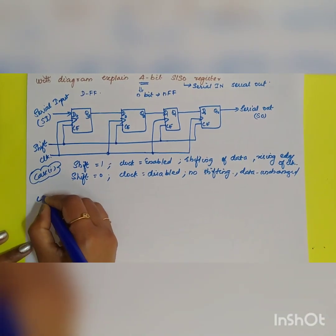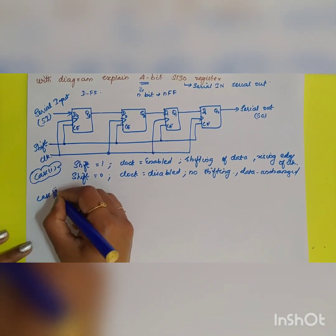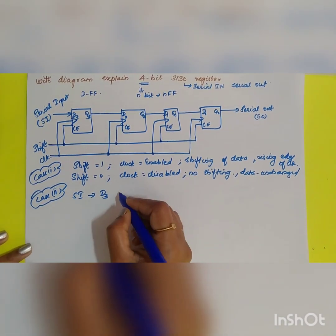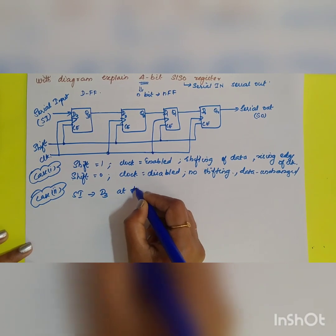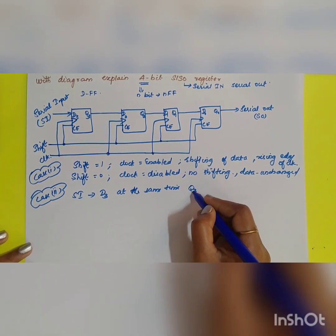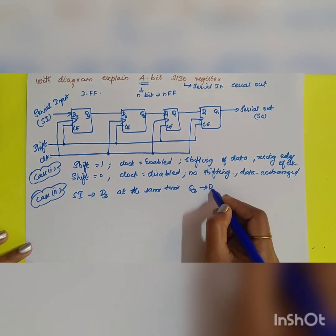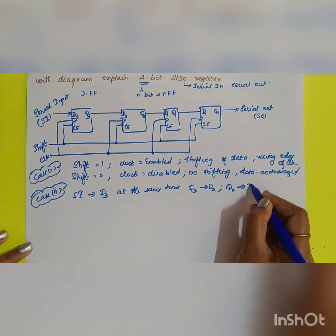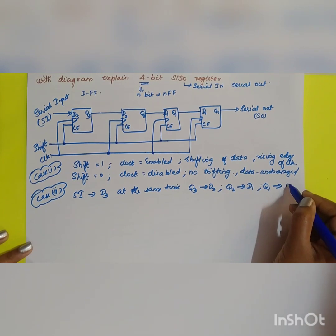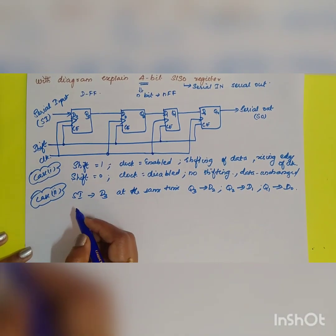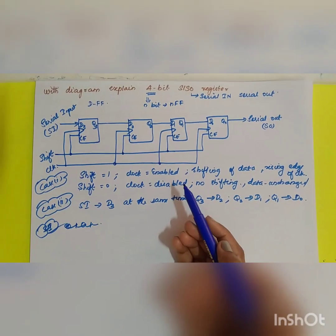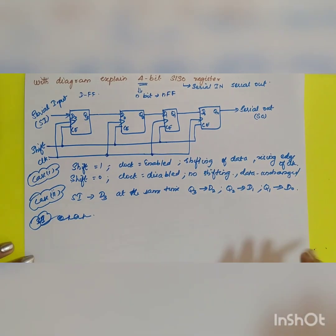Case 2 — when serial input is applied to D3, shifting occurs simultaneously: Q3 shifts to D2, Q2 shifts to D1, and Q1 shifts to D0. This is the general concept of the SISO register operation.